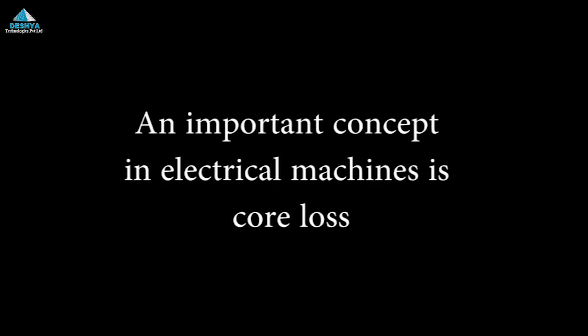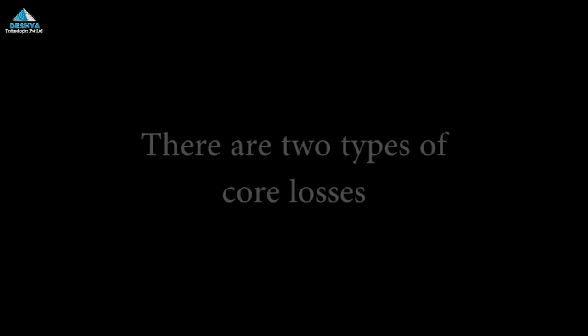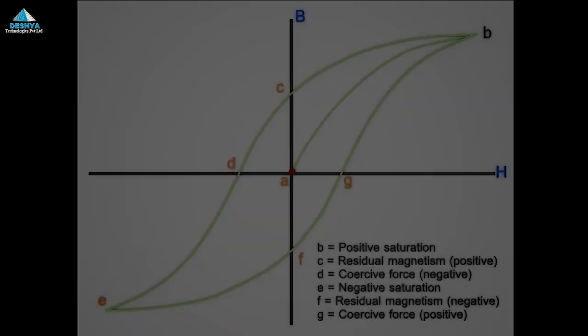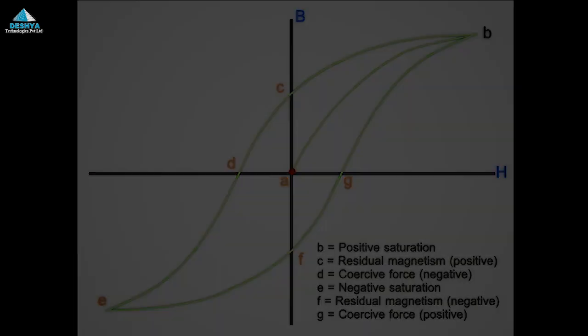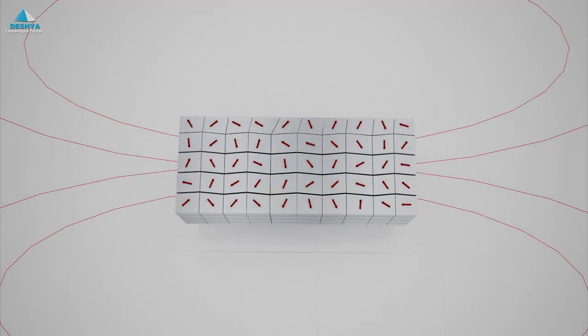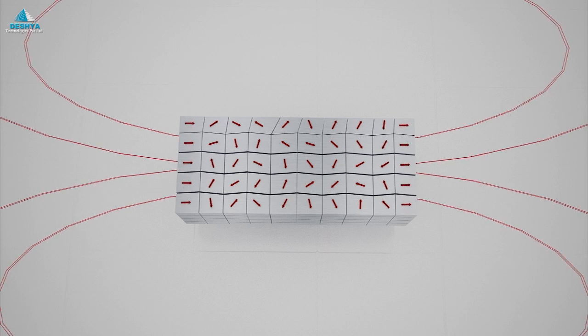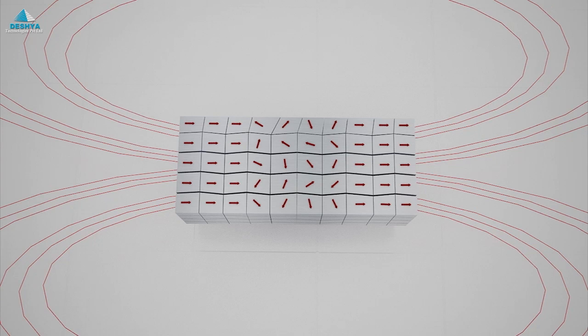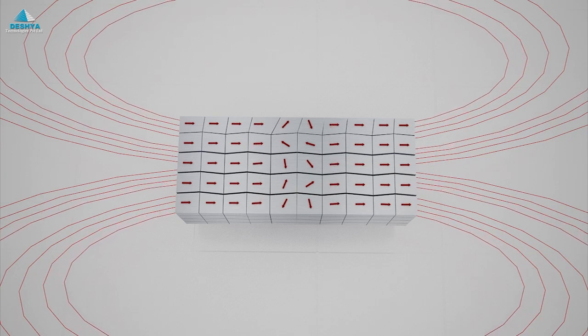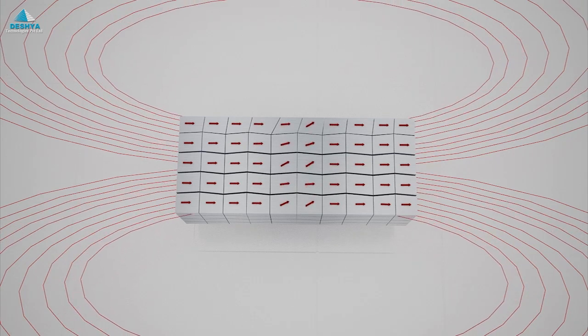An important concept in electrical machines is core loss. The core loss is created due to two phenomena: hysteresis and eddy current. Hysteresis is an inherent property of ferromagnetic materials. The e-book has detailed 3D animations which explain the complex phenomenon. This animation shows how internal magnetic domains align themselves as the external magnetic field increases.